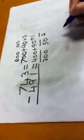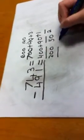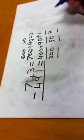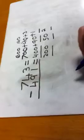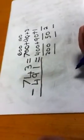Then under the 743 and the 491, under the line you write 252.